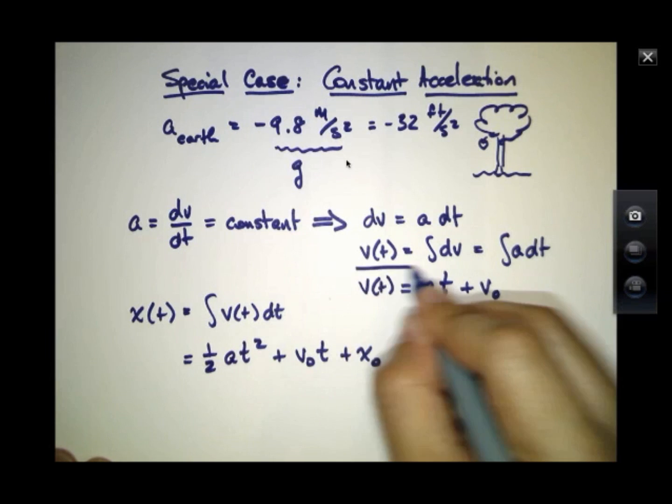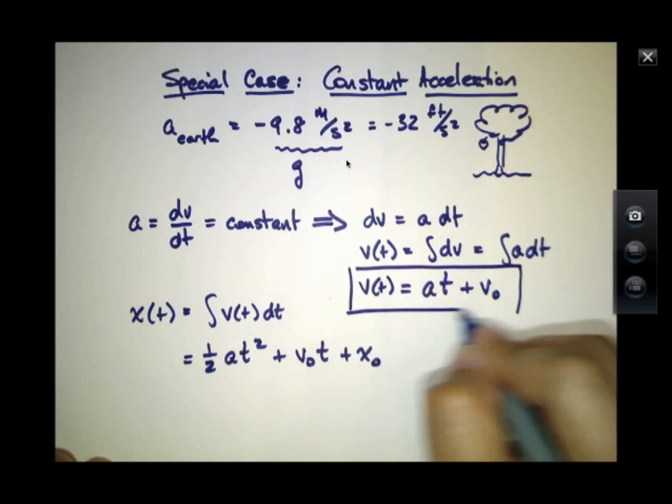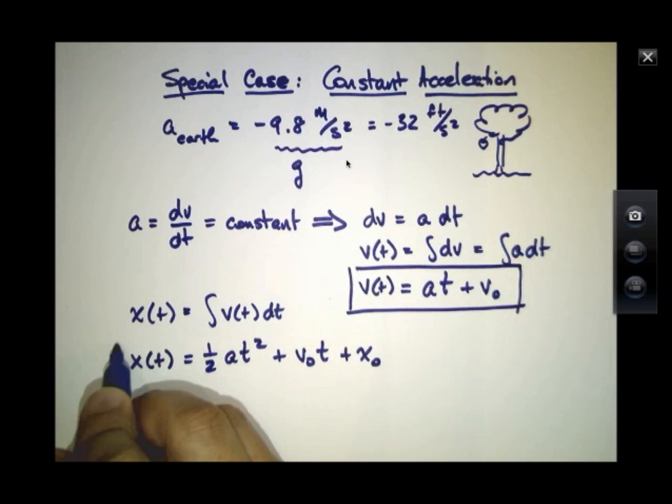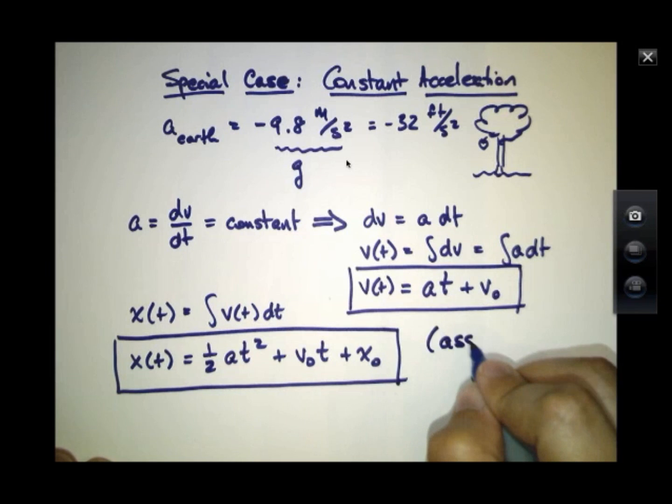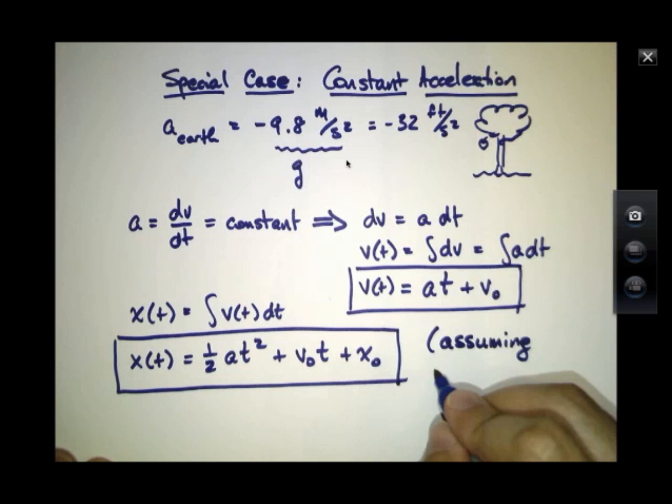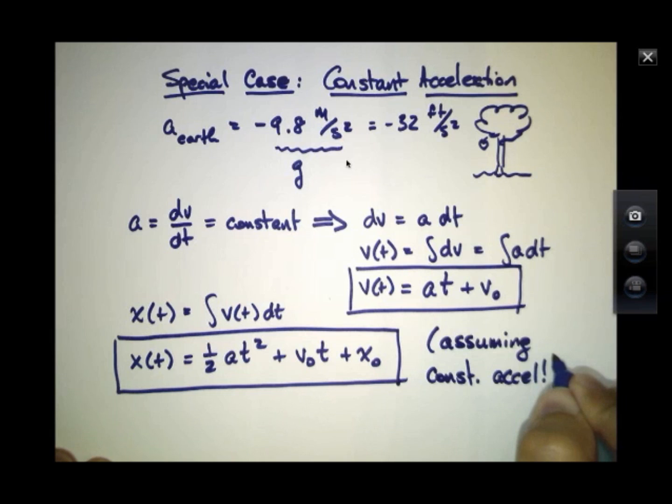So there are two expressions here which are important for you to know. Assuming constant acceleration, then the position as a function of time will be quadratic. It will be 1 half at squared, a is acceleration, plus v not t, plus x not. And the velocity as a function of time will be at plus v not.